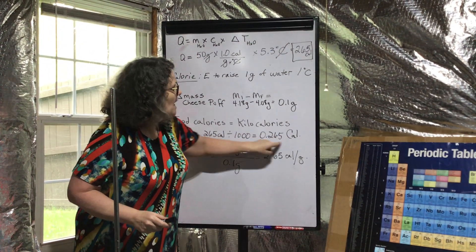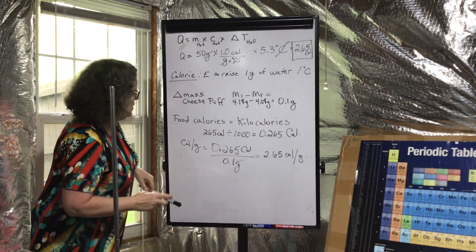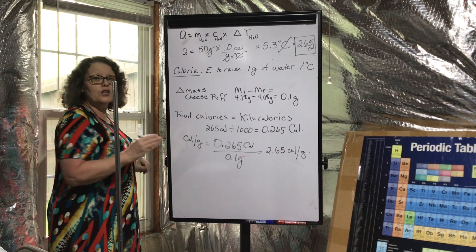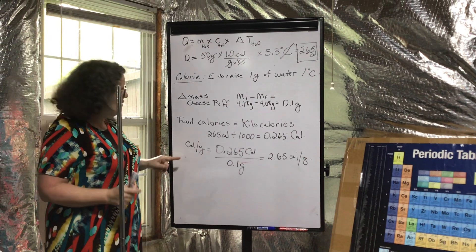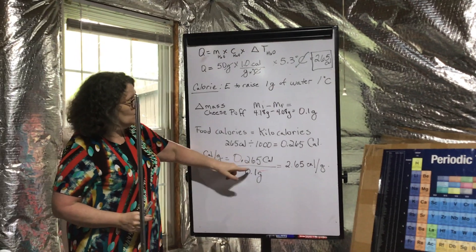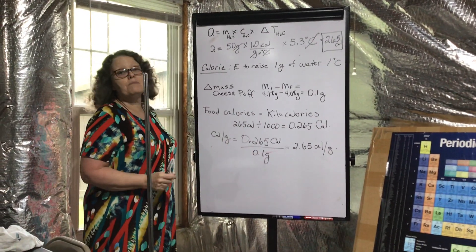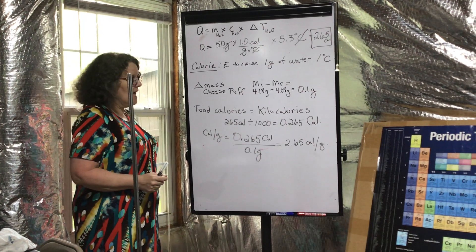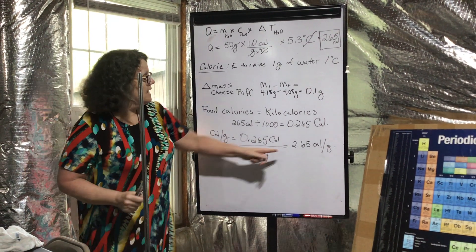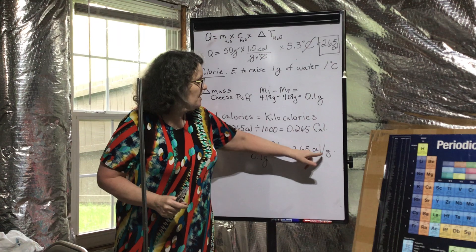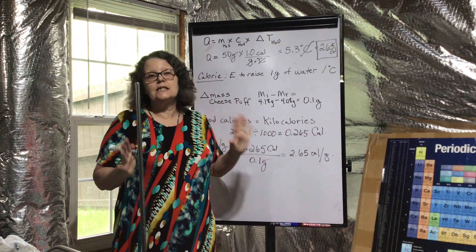Now if we're going to figure out the calories per gram for our puff, we take 0.265 calories divided by the mass, the change in the mass, 0.1, and we get 2.65 calories per gram.